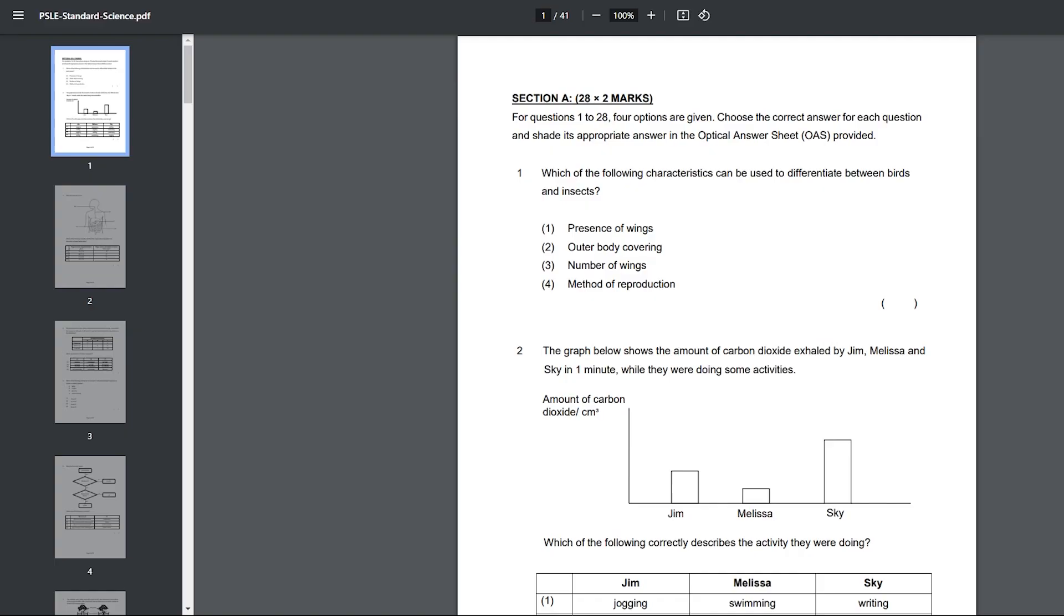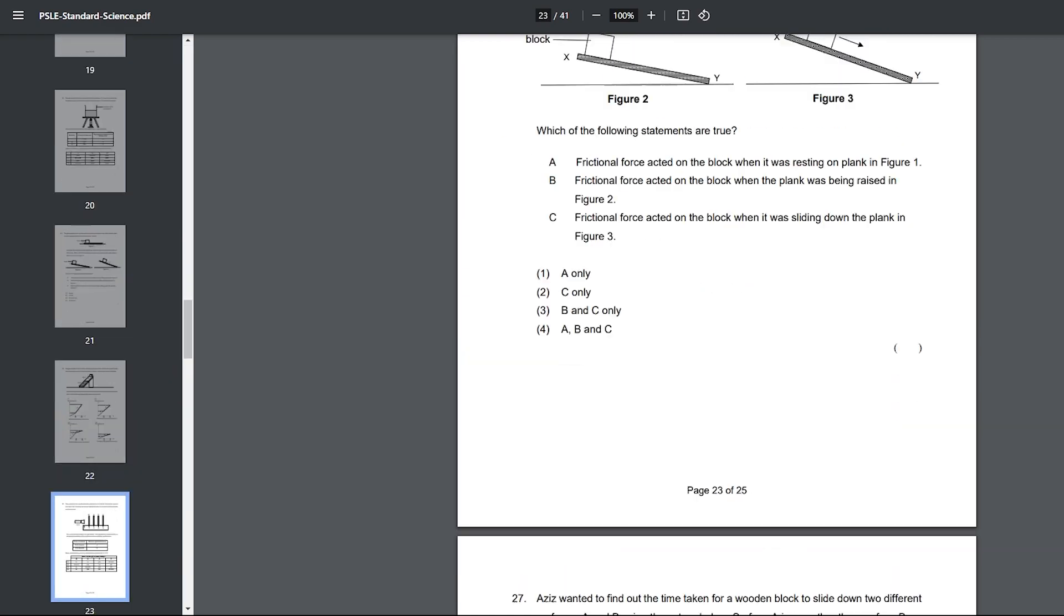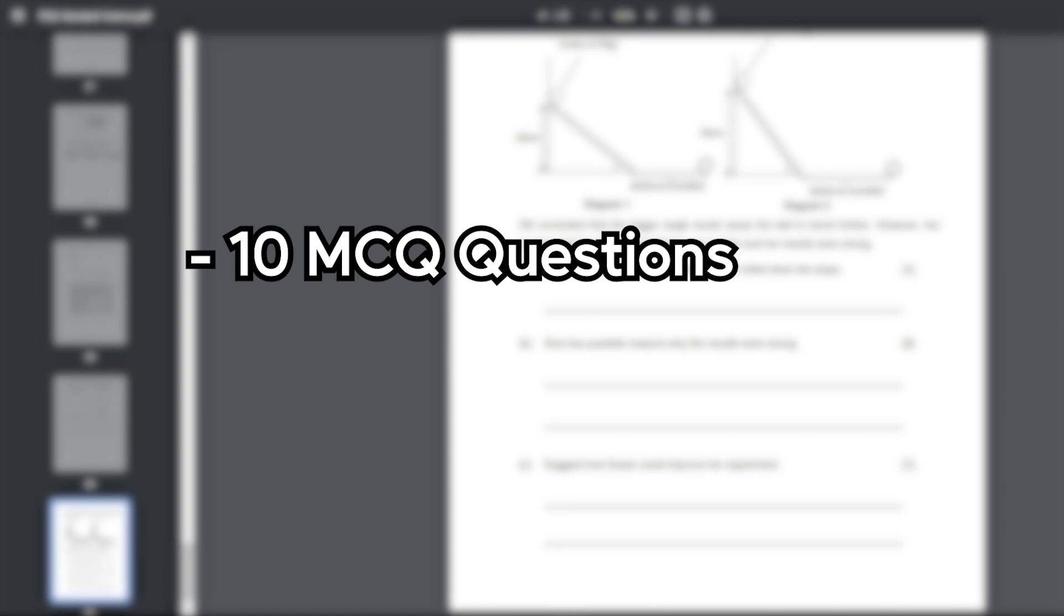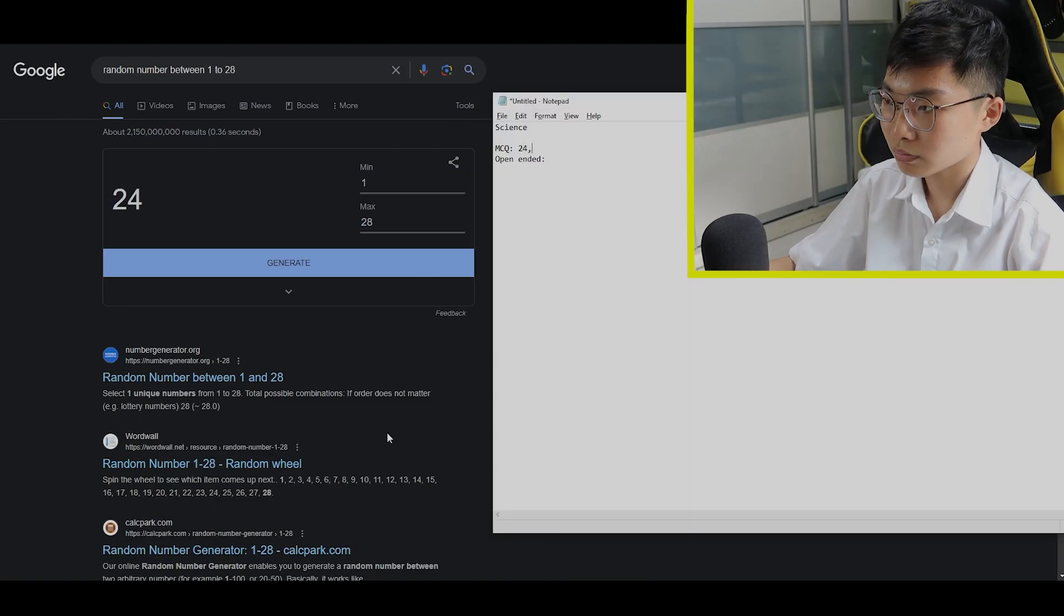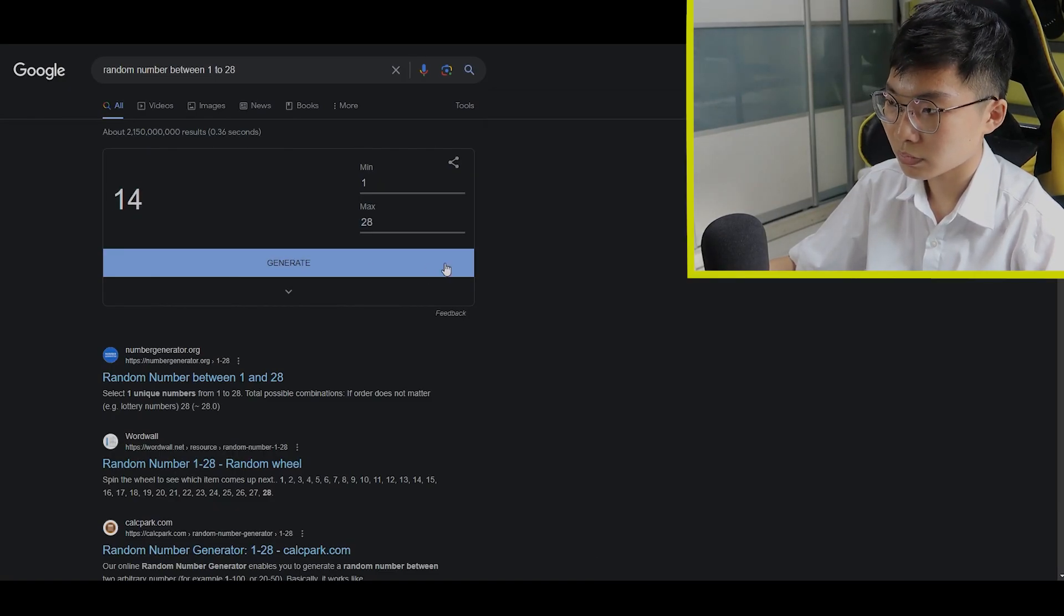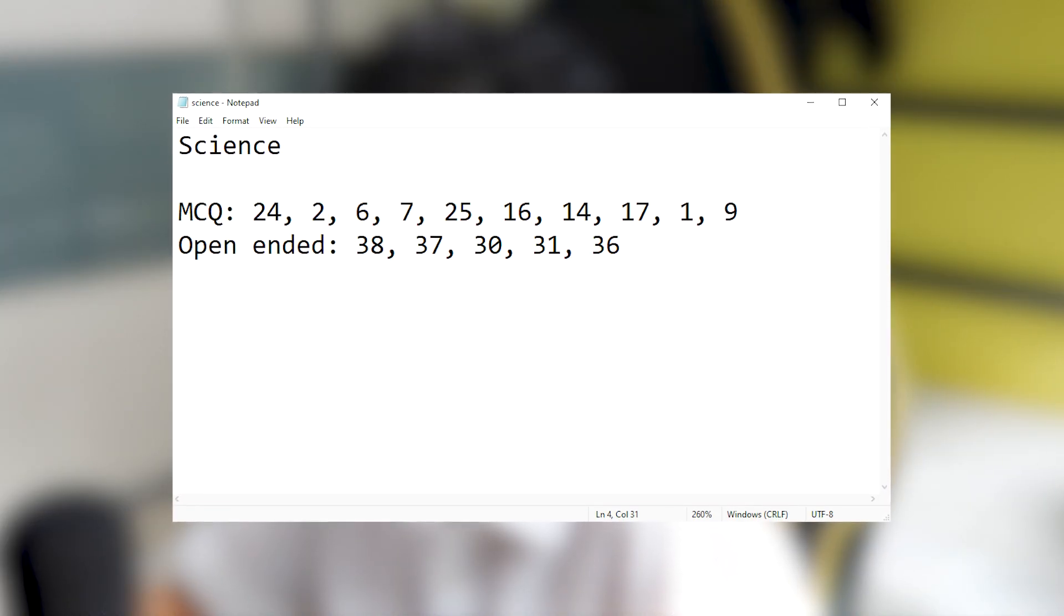Let's see if I still have it in me. It was at this point where I realized that if I were to do the full paper, this video would probably be a few hours long. So instead, I'll be doing 10 MCQ questions and 5 open-ended. I'll also be using Google to randomly choose the question numbers. So yeah, okay, these are the numbers that I got. Let's start off from the lowest number, shall we?